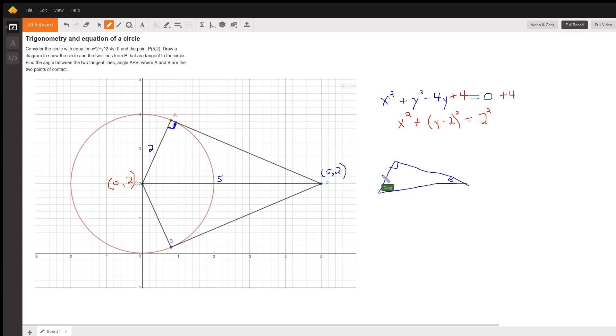This is 2, this is 5, and the relationship between those two sides of that right triangle is sin(θ) = 2/5.